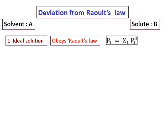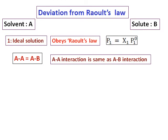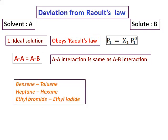Ideal solutions mean that if I call the solvent A and the solute B, after mixing, the solvent particles do not differentiate between solute and solvent particles. In other words, the interaction between A–A and A–B is the same. There is no extra interaction between solvent and solute. Examples include benzene and toluene, heptane and hexane, and ethyl bromide and ethyl iodide. These molecules look almost the same — heptane and hexane differ by only one CH₂ group — and so they form ideal solutions.